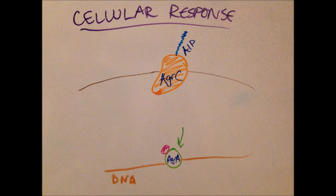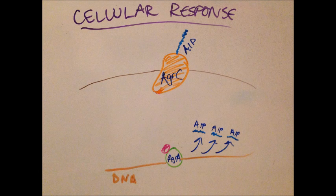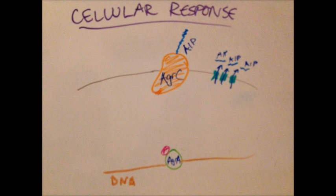Now that transduction is over, let's move on to the next phase of the quorum sensing process: cellular response. Cellular response is the fourth and final step of bacterial quorum sensing. Cellular response begins the very moment that the AGRA protein begins to transcribe the bacteria's DNA.